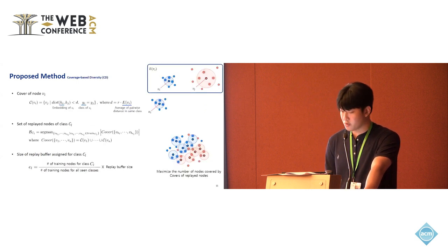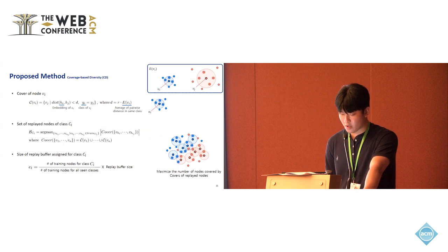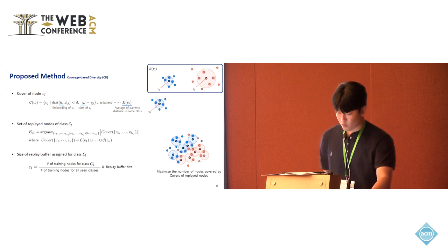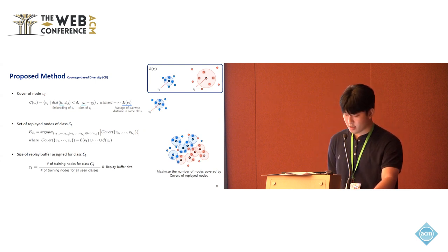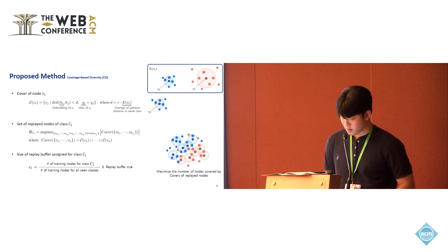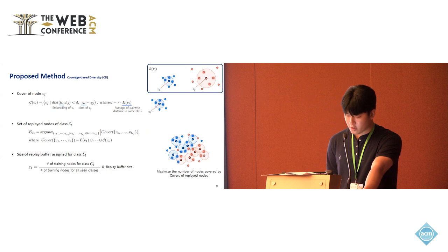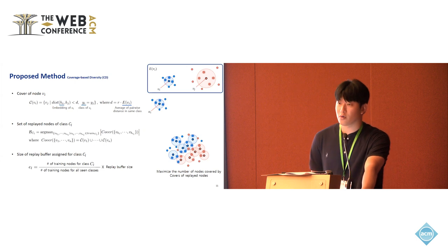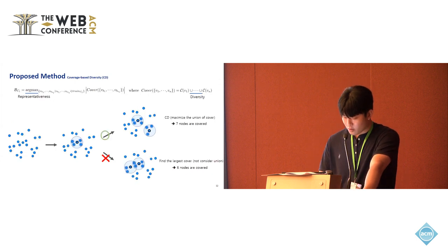First, let me introduce the coverage-based diversity method called CD. We define the cover of each node as a set of nodes within a specific area based on the Euclidean distance in the embedding space. We also adjust the distance based on the density of embedding for each class. Then we select replay nodes such that a union of their covers is maximized by using these equations. The number of buffers for each class is set proportionally to the number of samples in the training set for that class.